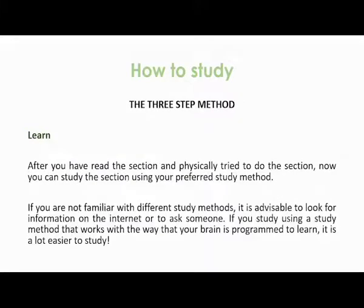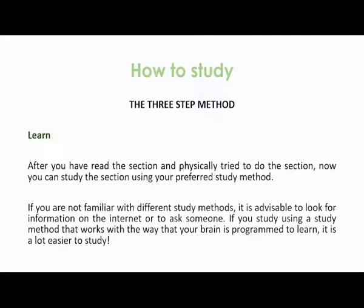The last step of the three-step process is to learn. After you have read the section and physically tried to do the section, now you can study it using your preferred study method. If you are not familiar with different study methods, it's advisable to look them up on the internet or ask somebody with knowledge about this. If you use a study method that works in the way your brain is programmed to learn, it is just a lot easier to study.